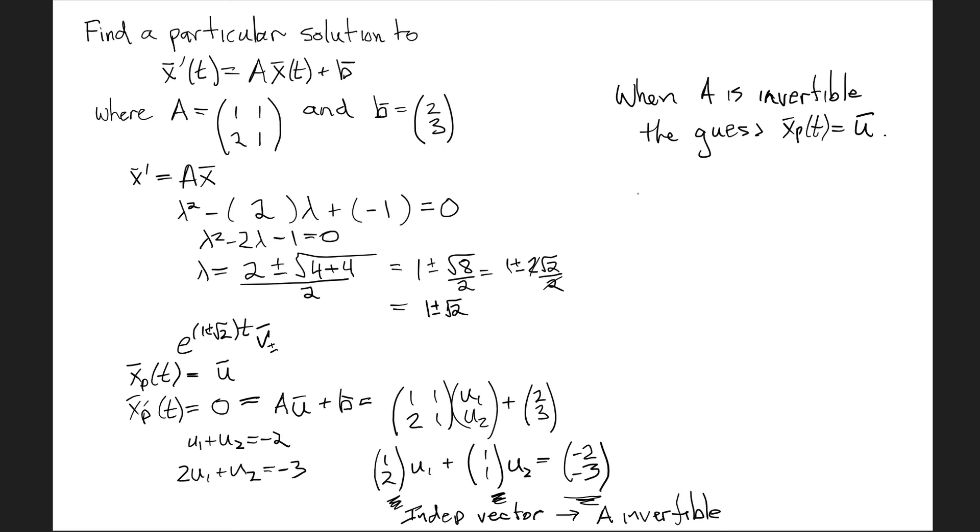Now I can write down my full general solution: x(t) = c₁e^(λ₁t)v₁ + c₂e^(λ₂t)v₂ plus the vector we get by solving this problem. By inspection, if I use u₁ = -1 and u₂ = -1, I get 1 and 1 gives me 2, and 2 and 1 with -1s in front gives me -3. So the particular solution is (-1,-1).